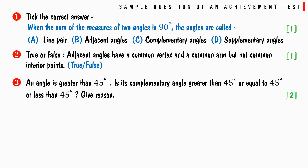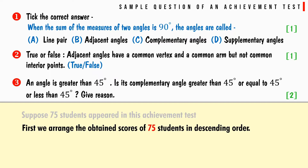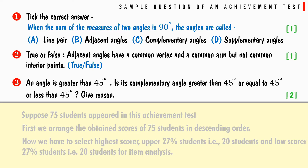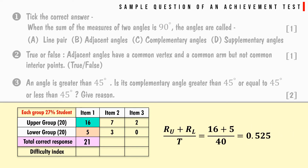Consider three sample questions from an achievement test taken by 75 students. Scores are arranged in descending order, and the upper 27% (20 students) and lower 27% (20 students) are selected. For item number 1, suppose 16 students from the upper group and 5 from the lower group answered correctly, giving a total of 21 correct responses and a difficulty index of 0.525.